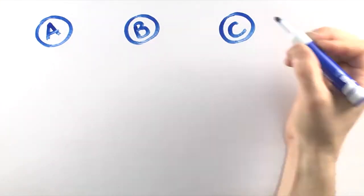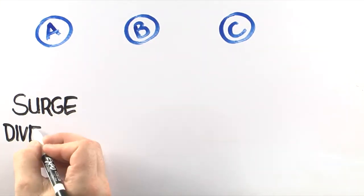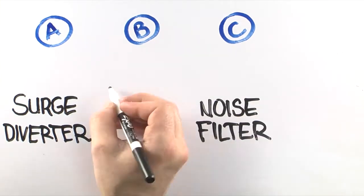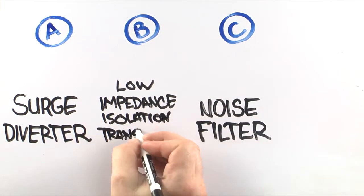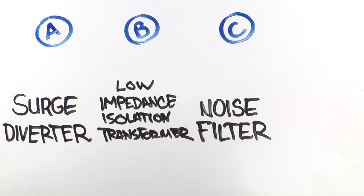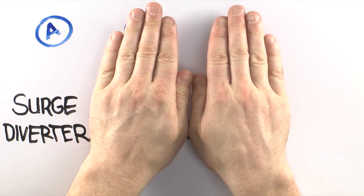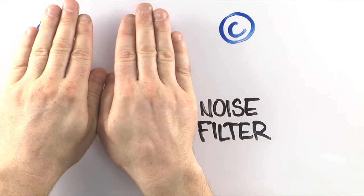Here's why. The difference is in the three levels of protection. A surge diverter, a noise filter, and most importantly, a low impedance isolation transformer. It's the ABCs of power conditioning. Some power protection devices have a surge diverter, some have a filter, and some have both.